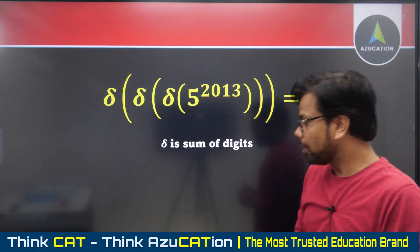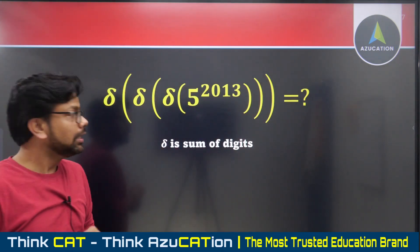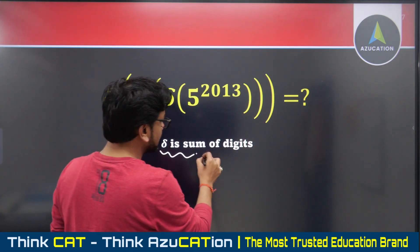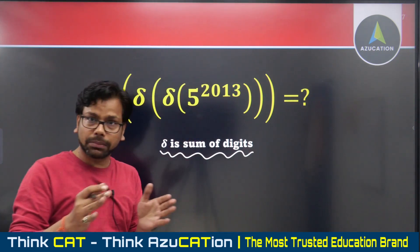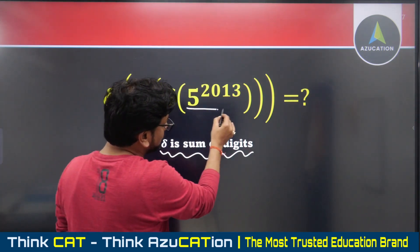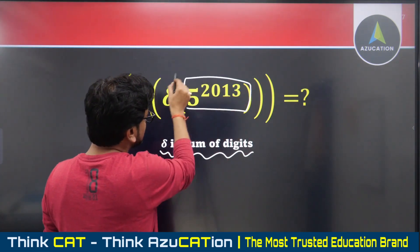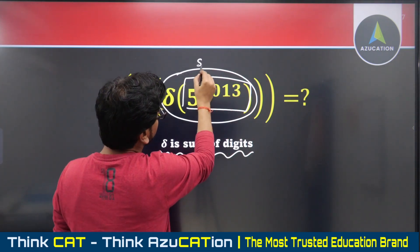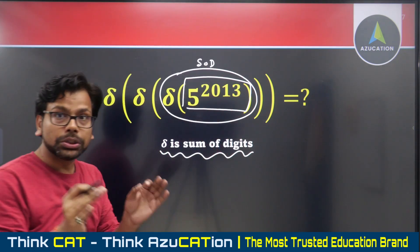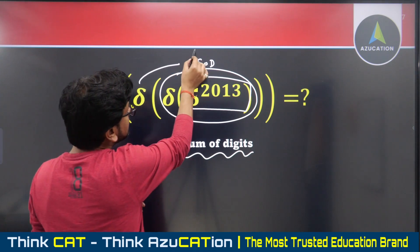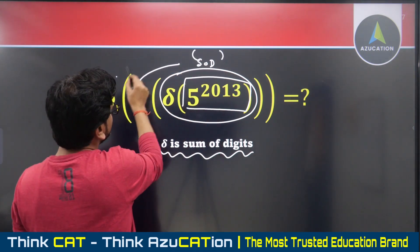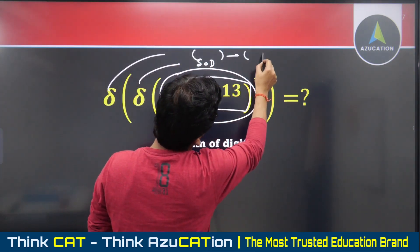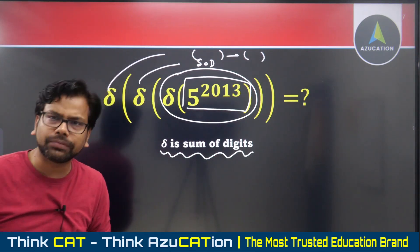I hope you paused the video, understood the question, and tried solving it. The question asks: delta is denoted as sum of digits. First, find the sum of digits of 5 raised to power 2013. Then find the sum of digits of that result, then find the sum of digits again, and tell me the final value.